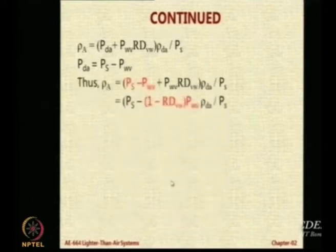Now, looking further, P_DA is the pressure or the partial pressure of the dry air. That will be equal to the total pressure minus pressure of the water vapor. That is how we define partial pressures.